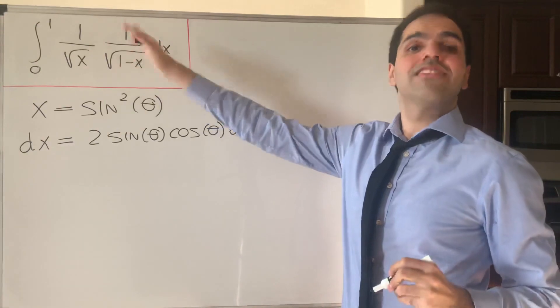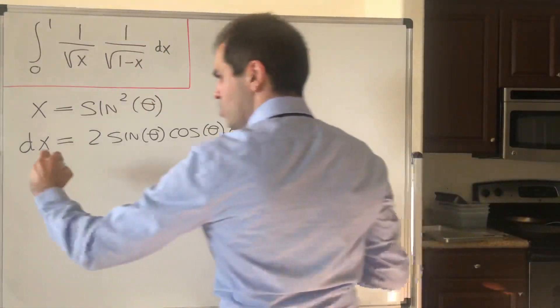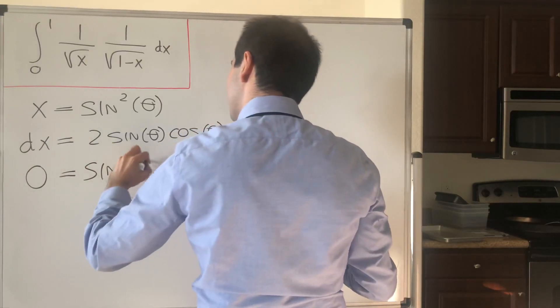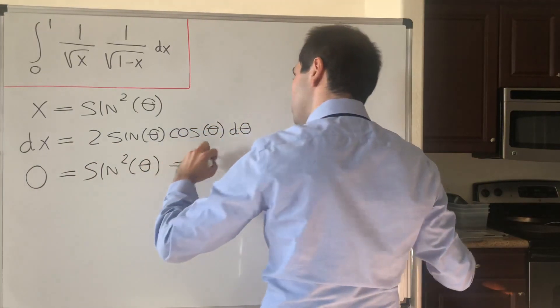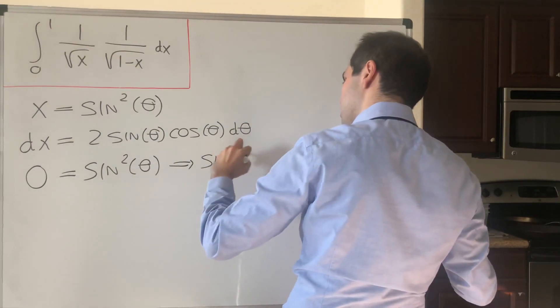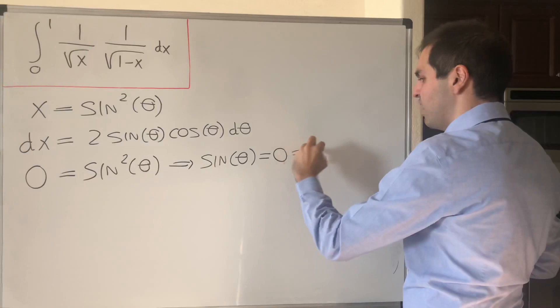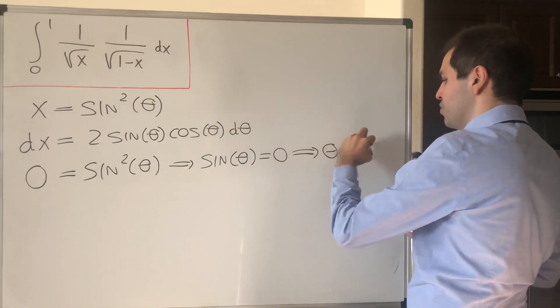Then next, let's figure out the endpoints. So if you have x equals 0, what happens? 0 equals sine squared of theta, which gives you sine of theta equals 0, and the easiest angle which satisfies that is simply theta equals 0.